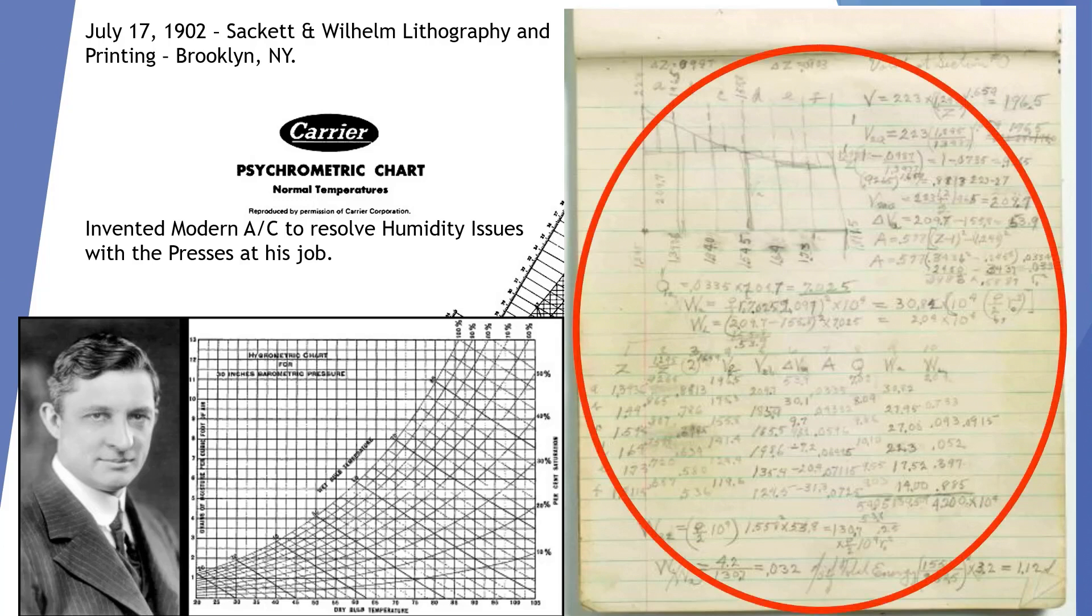This picture on the right is one of the actual worksheets that Willis Carrier was working on when he was developing the psychrometric chart.